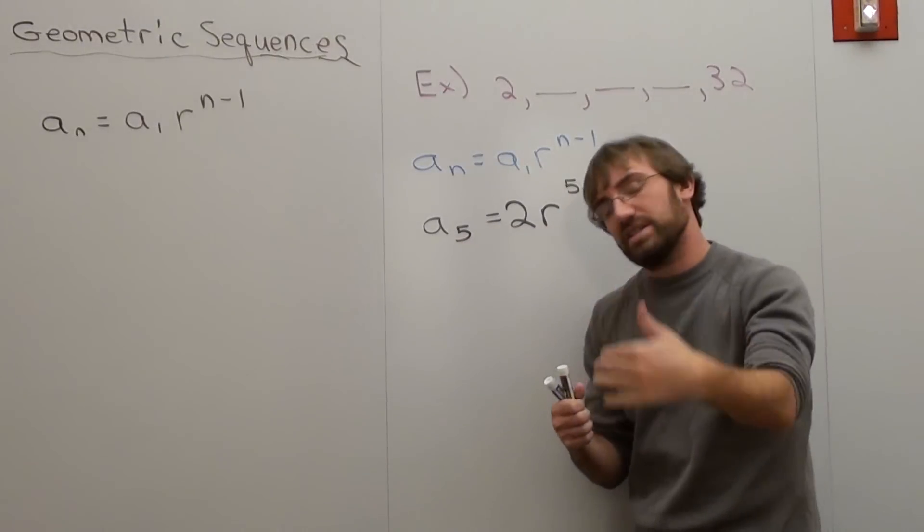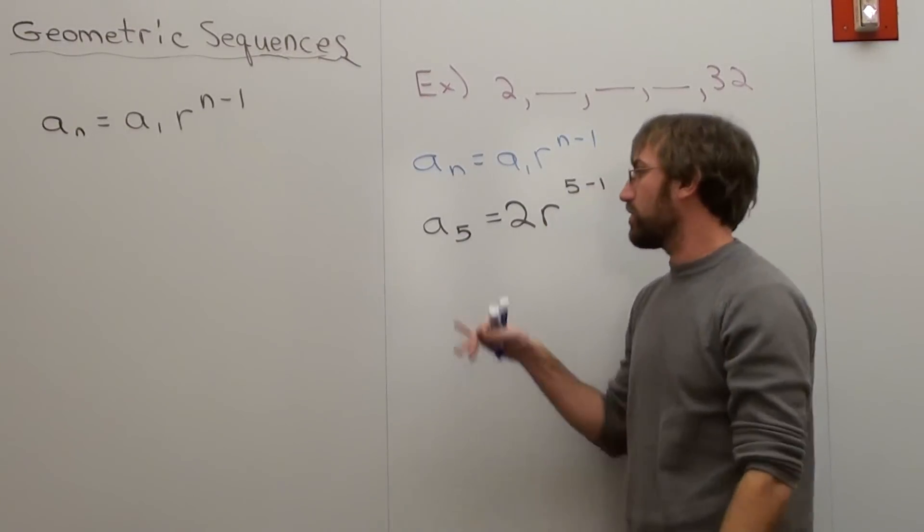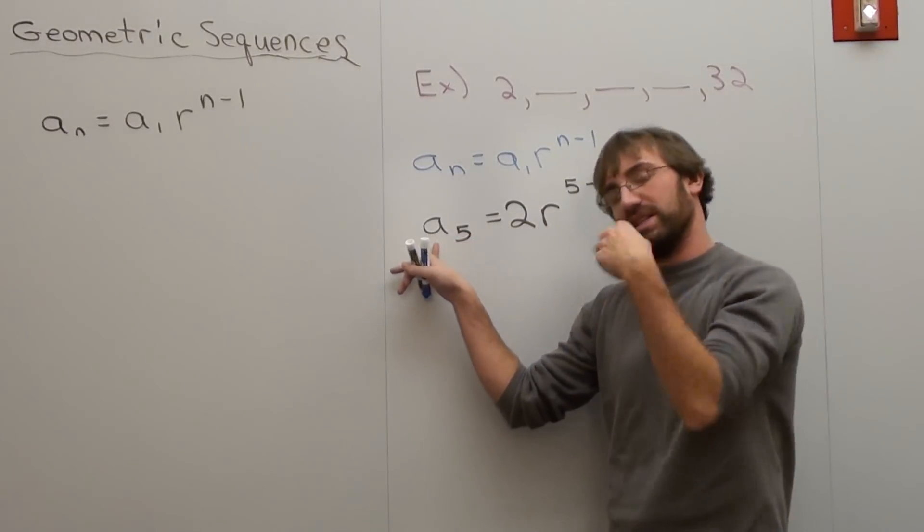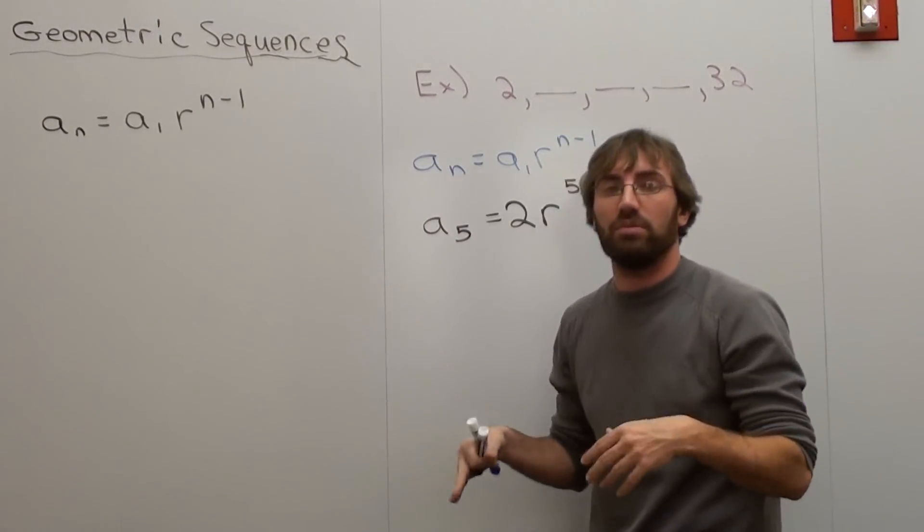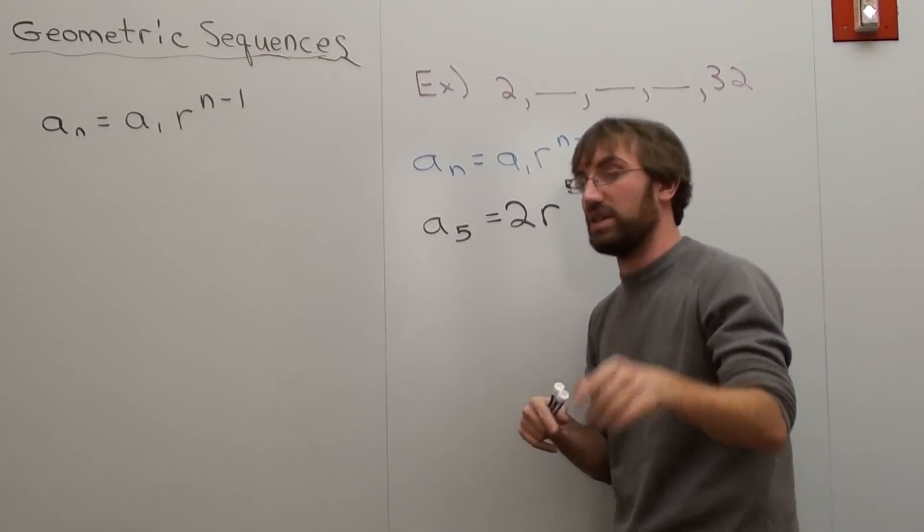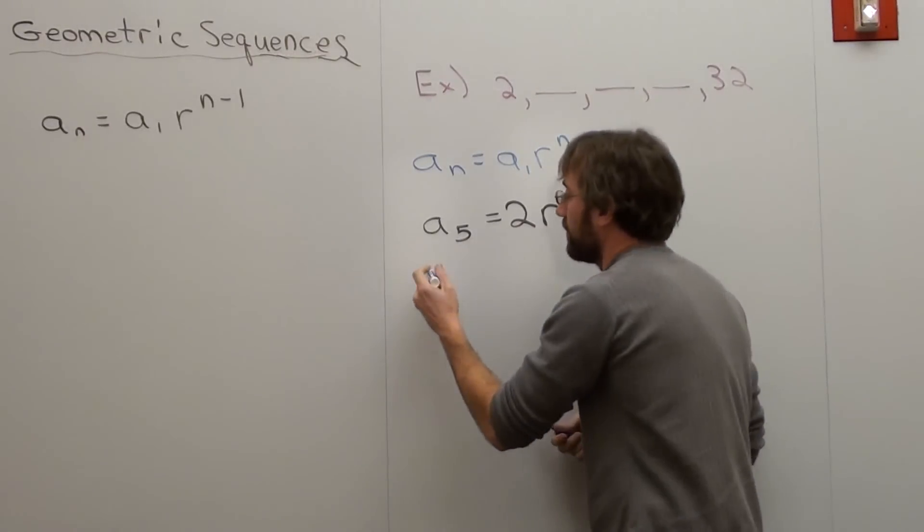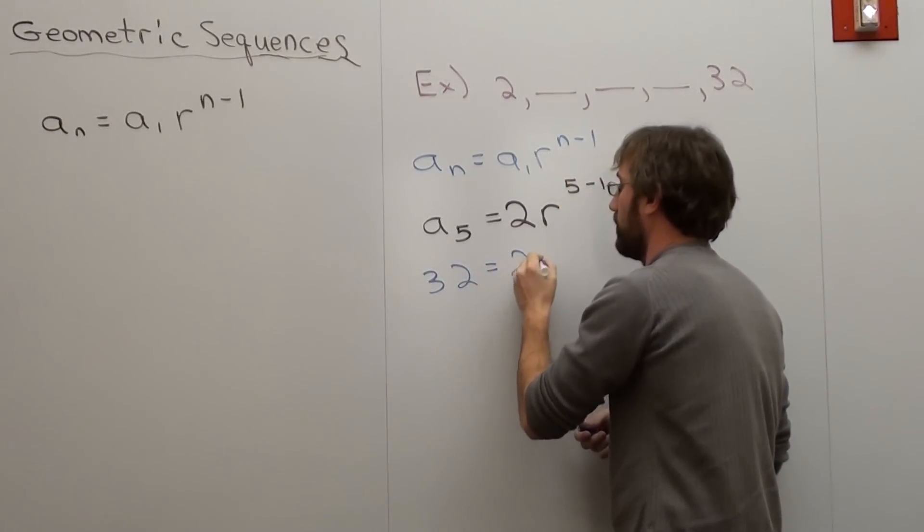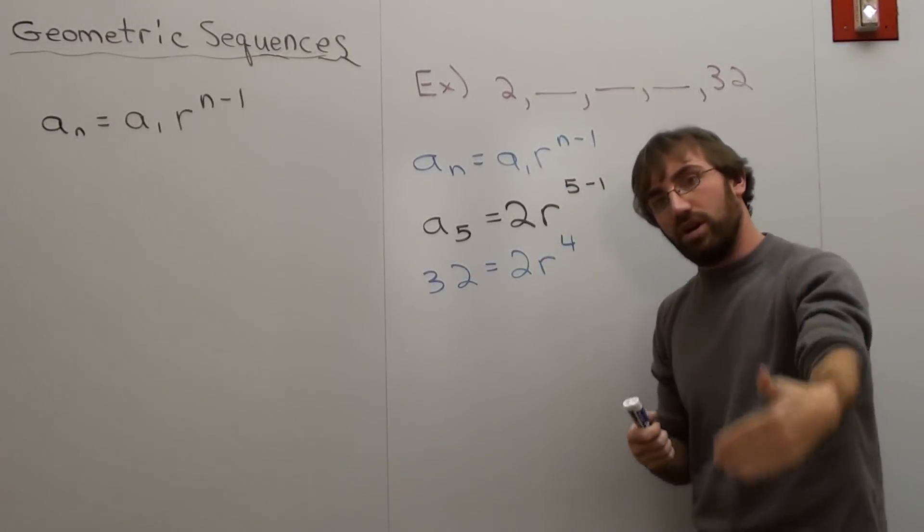Now, it still doesn't really help me out that much because I want to figure out my r, and I don't know my r, so I want to make sure that this is actually something tangible. It's a number, a sub 5, fifth term. Put in a number for it, and then it's going to be easier. My number is 32. 5 minus 1 is 4. Figure out what r is.